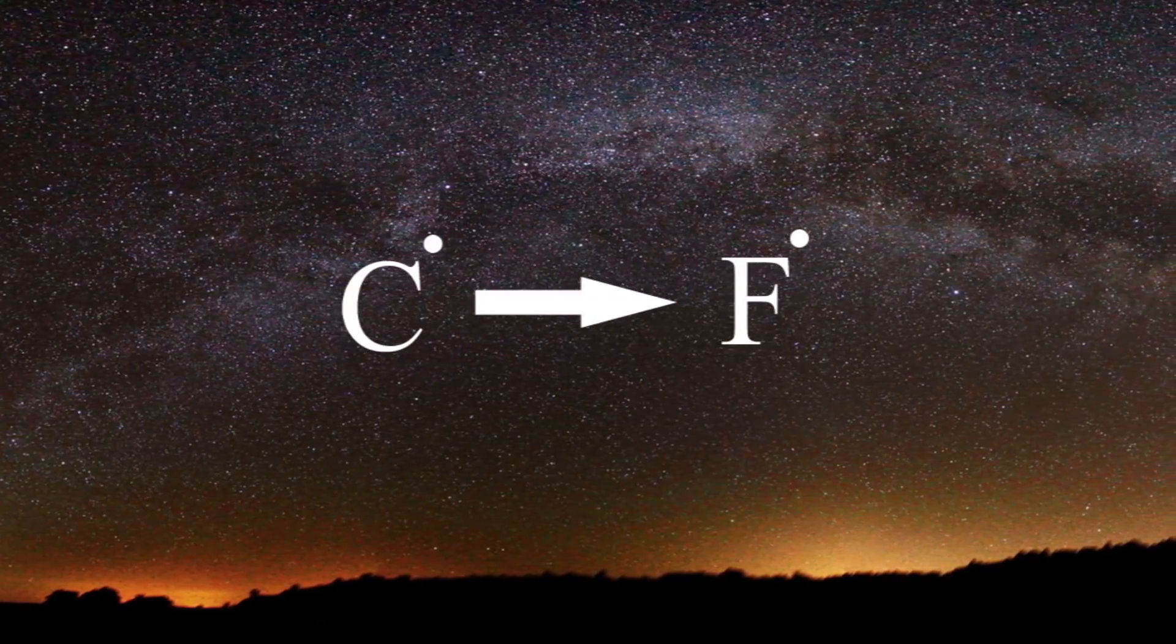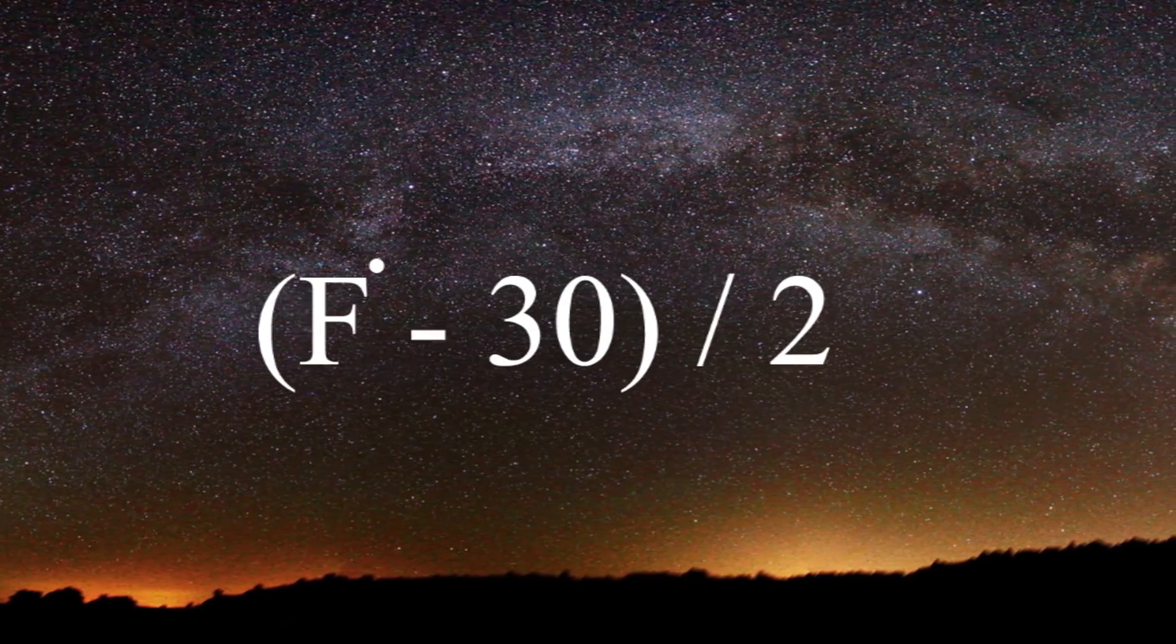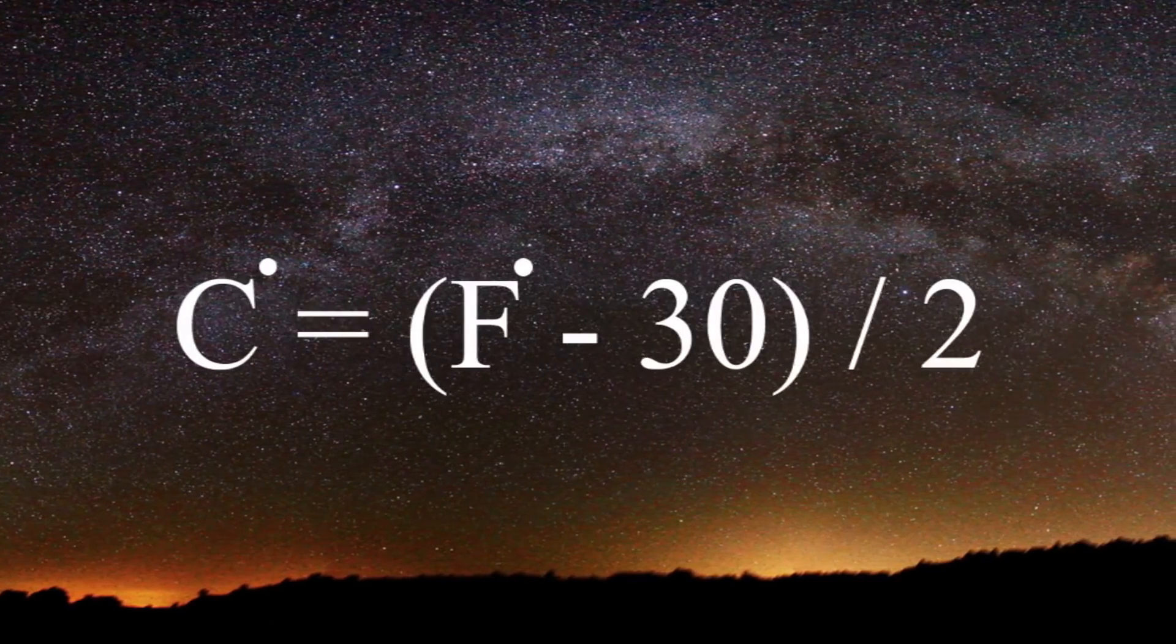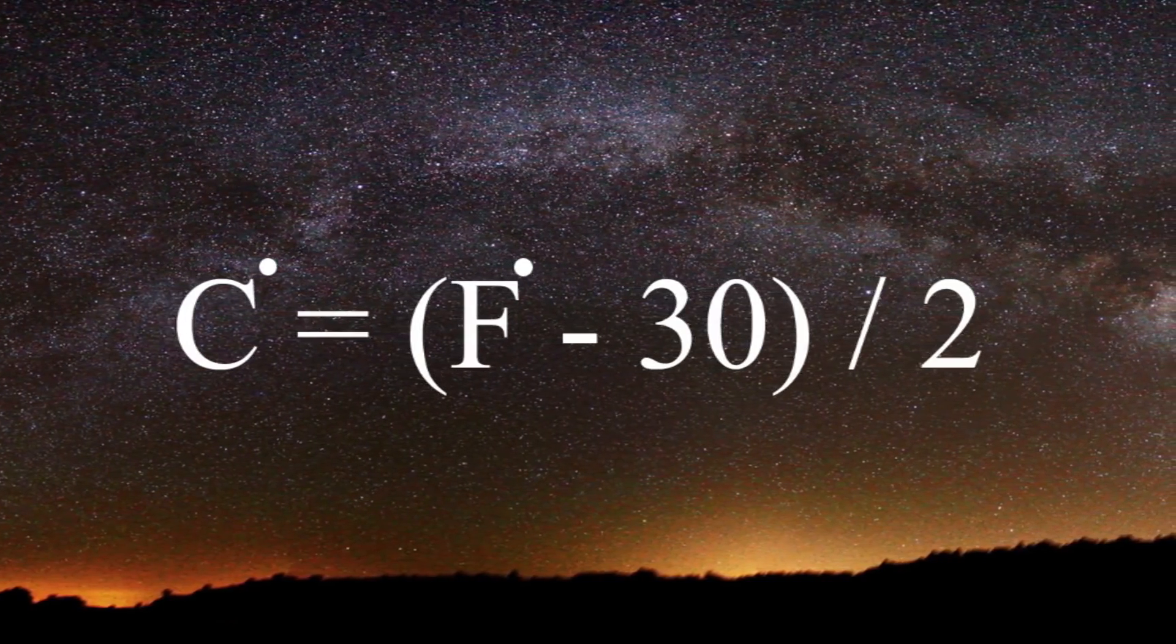To convert Fahrenheit to Celsius, you'd do the opposite. Subtract 30 from the Fahrenheit temperature and then divide that number by 2. So Fahrenheit temperature minus 30 divided by 2. Converting the two isn't really that difficult.